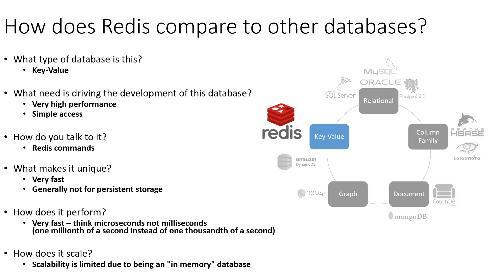Redis is super easy for applications to get data in and out of, because by default it doesn't require any kind of authentication or any special network protocol, driver, or client to connect. In fact, we can connect to a Redis server using bare-bones network utilities like telnet or even netcat — which is kind of like when we used curl to bring down web page content without the heavy overhead of a full web browser.